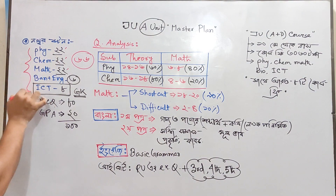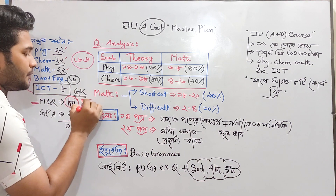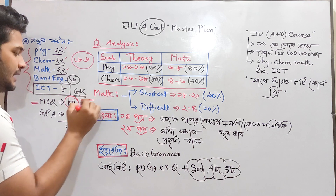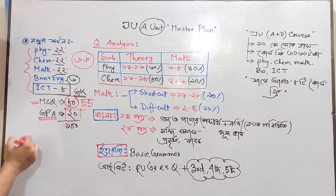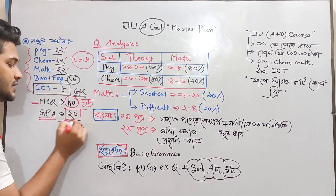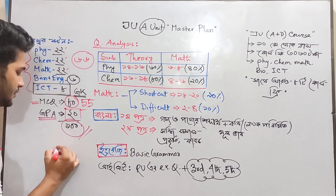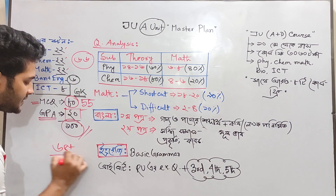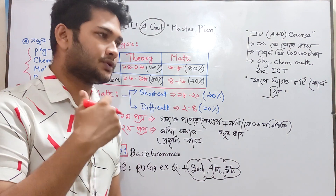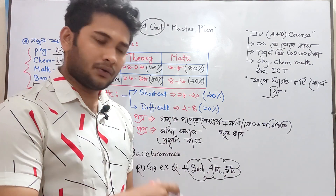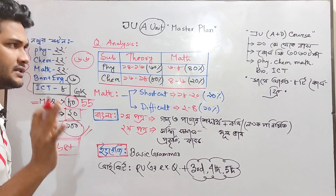If you have a number, you can see that the number is MC. You can see that the number is 65 plus. If you have a chance to get 65 plus, you can get 100 chance. If you have data analysis, you can get 1 RKM. If you have 65 plus, you can get 100 chance.